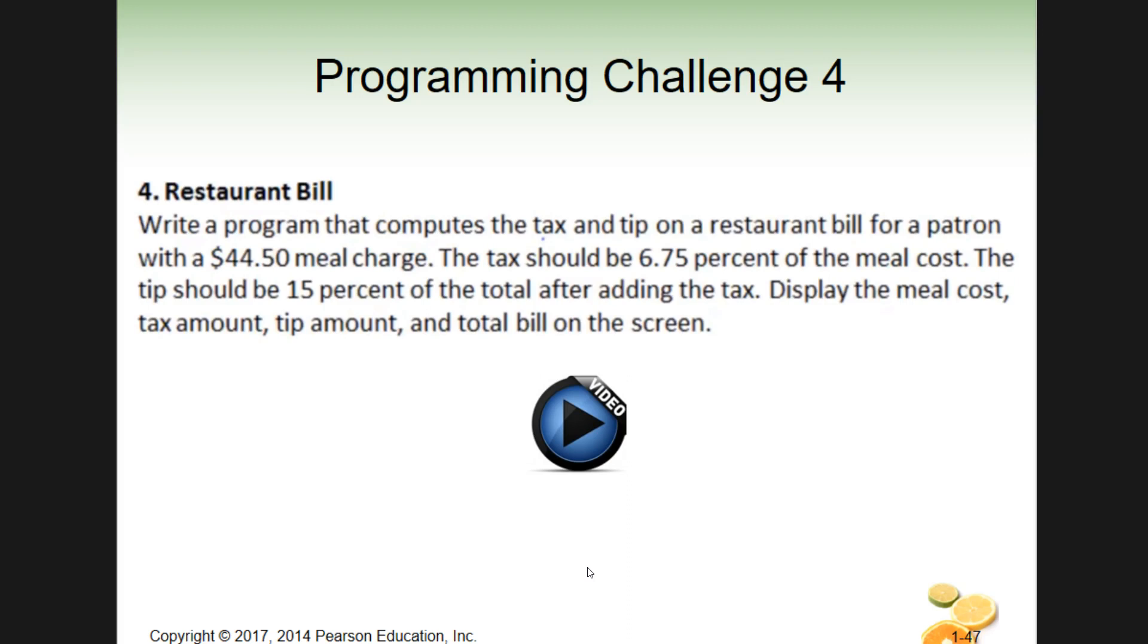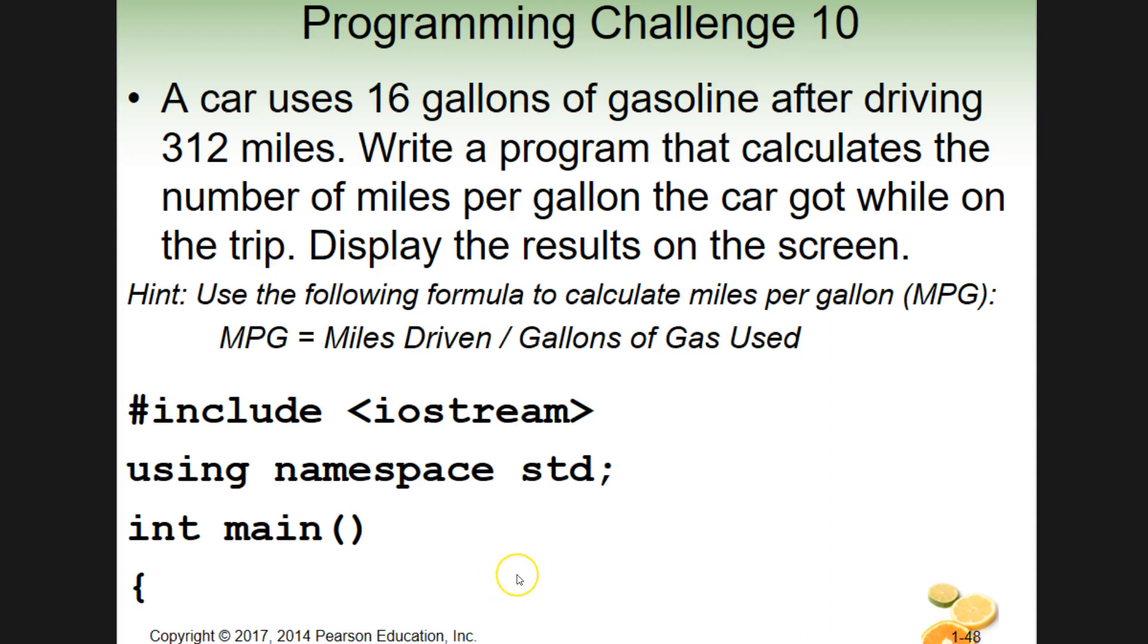So our next problem, and you'll see this in canvas too, as an actual assignment you'll turn in, is we have this right here. So this programming challenge 10, I believe. And again, these numbers are a little bit different, just to mix it up on you a little. So a car uses 16 gallons of gas for driving 312 miles. So write a program that calculates the number of miles per gallon the car got while on the trip and display the results on the screen. And then there's a little hint on how you get miles per gallon. So you're going to give you the formula there. Remember we're using the forward slash to divide. So that's our divide symbol that we're using. And then this kind of gives you a little hint on getting started. So there's this one.